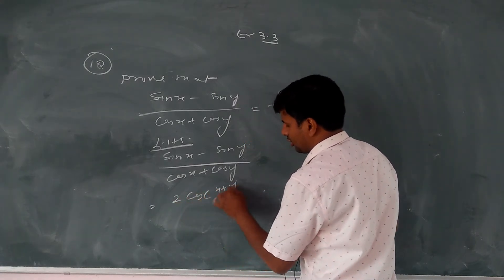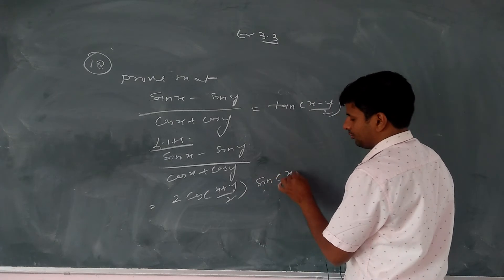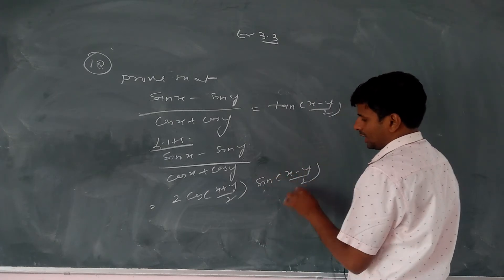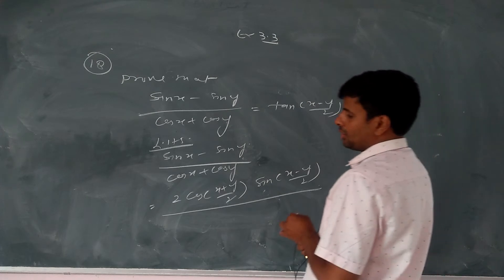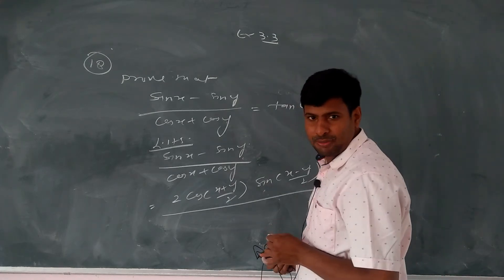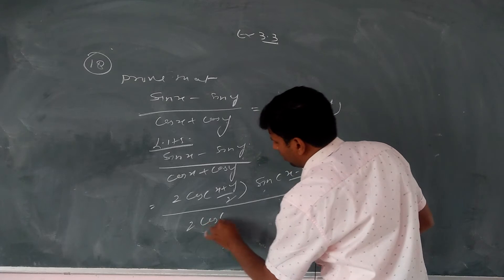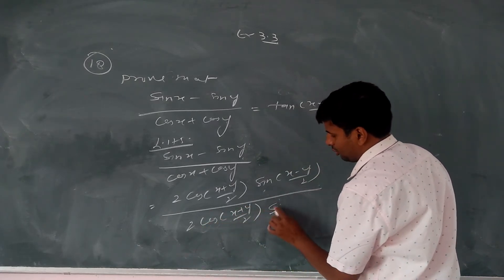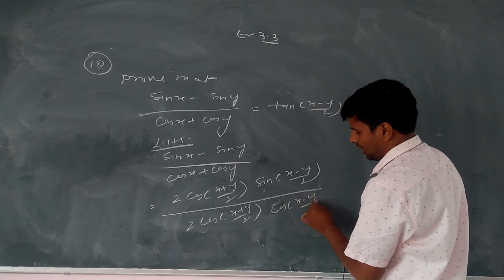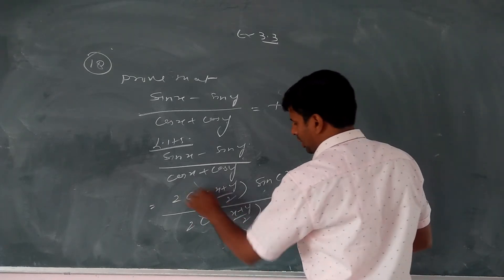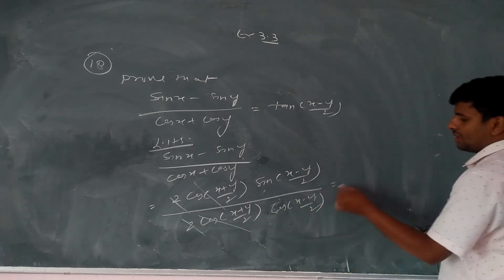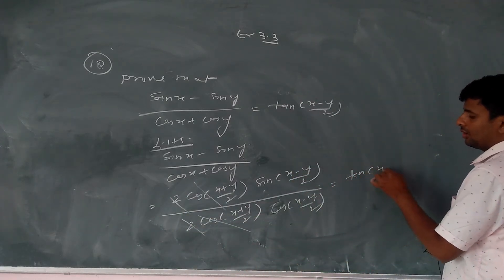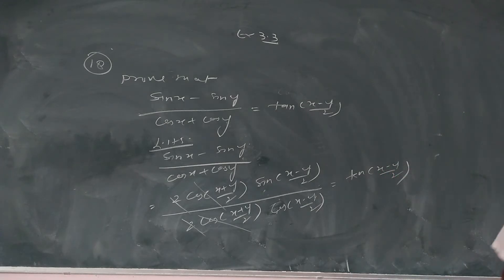Cos x plus y by 2. Or sine, you know we can tell that. In this way, we can prove that LHS is equal to RHS.